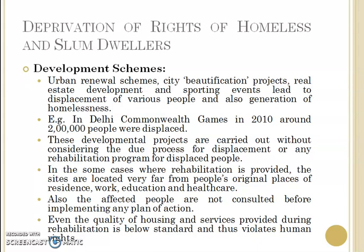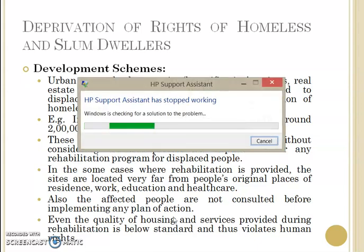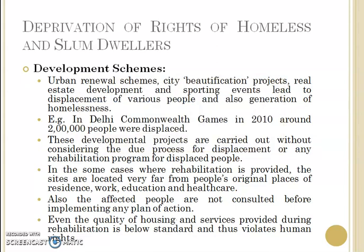In Delhi, during the Commonwealth Games in 2010, a Commonwealth village was built and for that purpose around two lakh people were displaced from their homes and were never rehabilitated. So earlier they were having homes and because of this sporting event these people were made homeless. These developmental projects are carried out without considering the due process for displacement or any rehabilitation program for displaced people.